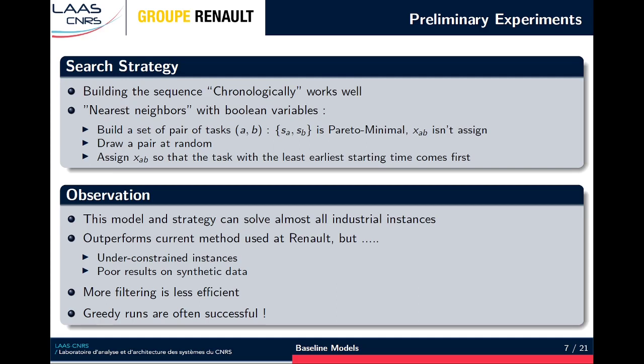But these instances are easy and under-constrained, because the process of assigning components to operators isn't optimized yet. On synthetic data we generated, this model cannot solve many instances, especially for long time horizons. We also tried to add more filtering but that was inefficient. The conclusion is that as we succeed to solve several instances without any fail, we think greedy runs led by good heuristics is the key to solving this problem. Then, we propose to learn an efficient heuristic policy and explore methods that can take advantage of this observation.